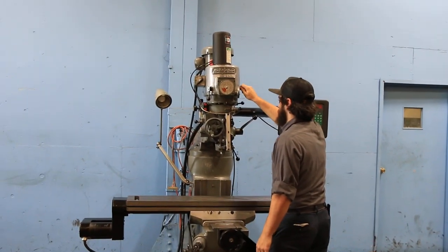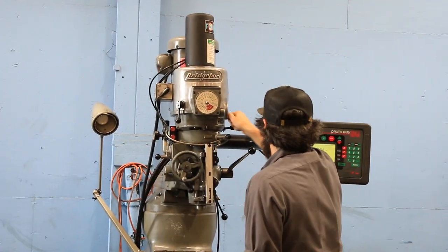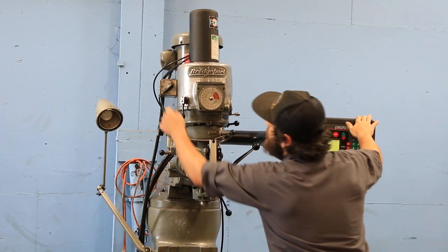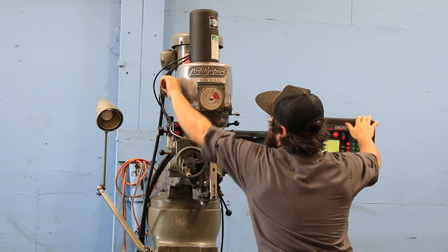You have 5 inch quill travel manual, you have 31 inch of X, 12 inch of Y saddle which are the two axis that are controlled and you have 16 inches of knee which is another manual axis.